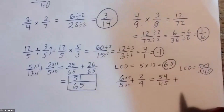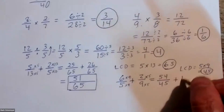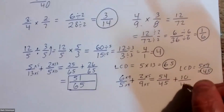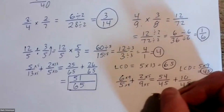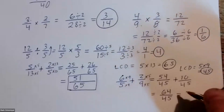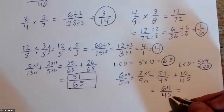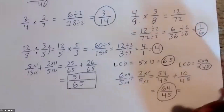The second fraction is multiplied by five over five to build up to ten over forty-five. What's fifty-four plus ten? Sixty-four over forty-five. Can we reduce sixty-four over forty-five? No, we can just leave it there. That's reduced — that's it.